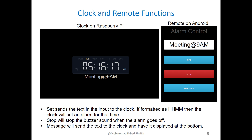If I set the input on the controller as 517 and hit set, it'll set the alarm for 5:17. If it starts ringing, I can hit the stop button on the remote to shut it off. And if I put any message like 'meeting at 9am' and hit the message button, it will be sent over to the smart alarm clock.